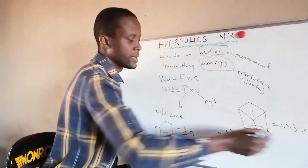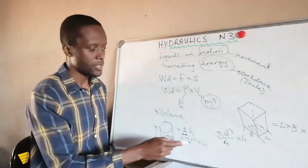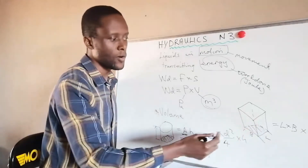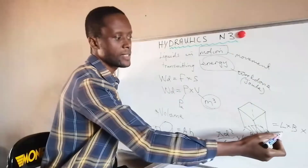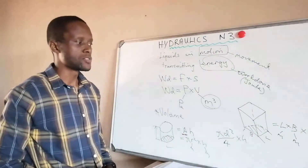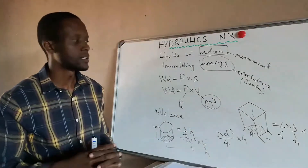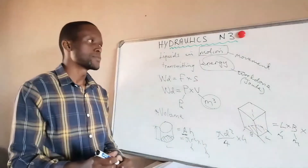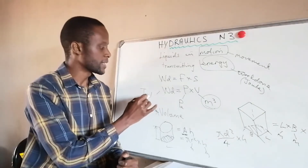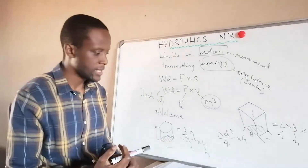All volume calculations should give an answer in cubic meters, so radius, length, breadth and height must all be in meters. The unit for work done is joules (J). Keep units in mind throughout your calculations.